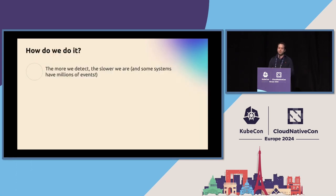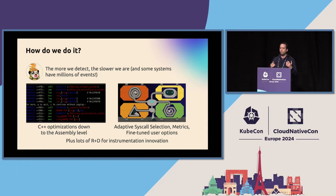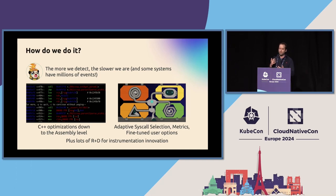How do we do it? We know that the more we detect, the slower we can be. If we put in more features, we might have a problem balancing performance. So what we do is give our users — especially our power users — a lot of knobs to adjust performance, a lot of metrics support. And we made Falco as smart as possible when it comes to operating at the interface between kernel and user space.